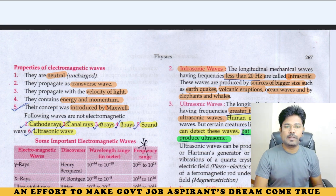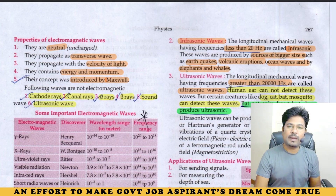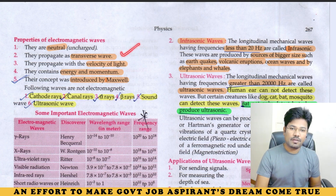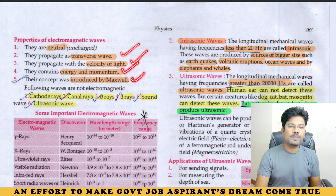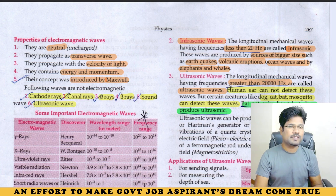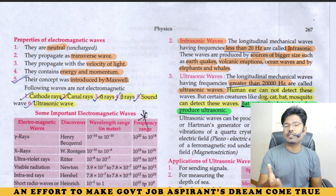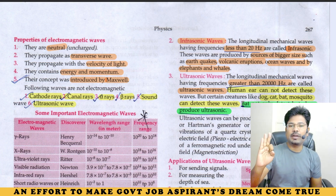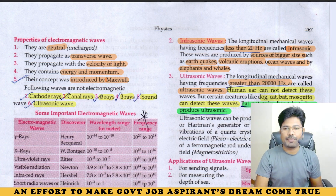Properties of electromagnetic waves: they are neutral in charge. They propagate as transverse waves. They travel at the velocity of light. They carry energy and momentum. Electromagnetic waves were introduced by Maxwell. These five properties are important to remember.